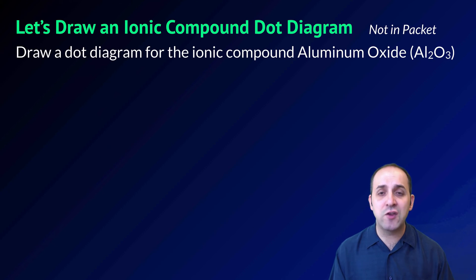Why don't you try one on your own? This is actually not in your packet. Draw a dot diagram for the ionic compound aluminum oxide, which is Al2O3. Pause the video, try it on your own, and then when you're ready, we'll go through it together.